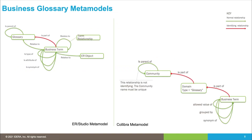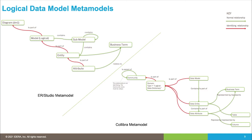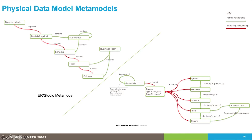We've done a lot of work mapping the meta models between the two tools. On the left you see the business term meta model for ER Studio, with the new version 19 relationships, and on the right the Calibra meta model. You can map a glossary to a domain inside a community in Calibra, map the relationship types between them, and there's flexibility to map properties between the two tools, including custom properties. Likewise for the logical data model - a logical data model in ER Studio can be mapped to a domain in Calibra of type logical data dictionary, with an object-to-object mapping. The same applies for the physical data model.